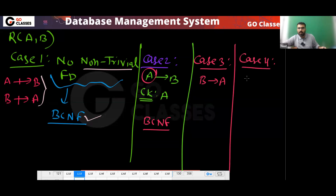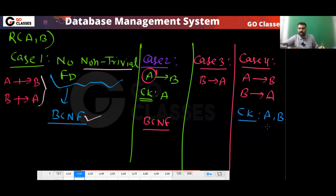Case four is that A determines B and B determines A. In this situation, both A and B are candidate keys — A is a candidate key and B is also a candidate key. Since every determinant in a non-trivial FD is a superkey, this relation is also in BCNF.